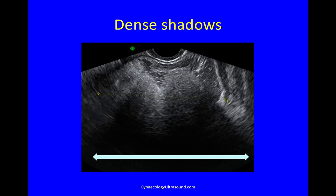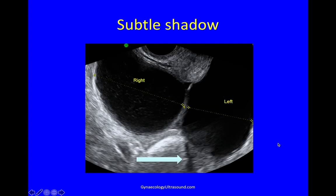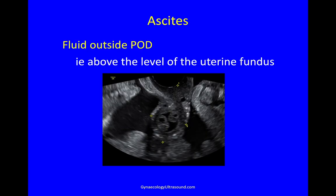The presence of shadowing is very important — it's artifact but we actively have to look for it. Shadowing can be very noticeable with dense shadowing behind a mass, or much more subtle as just some fine shadowing. Do look for this because you need it for the algorithms. Ascites is defined as fluid outside of the pouch of Douglas, above the level of the uterine fundus.